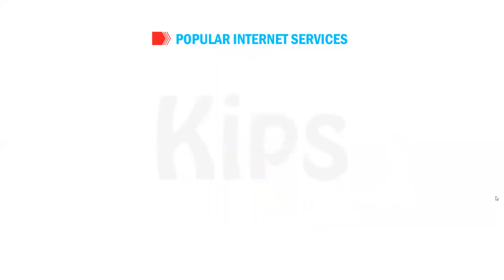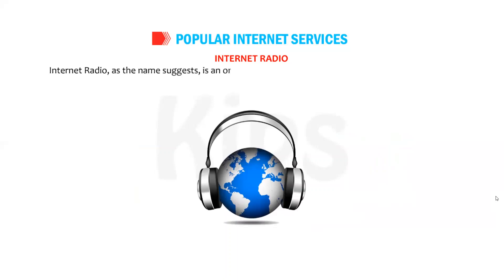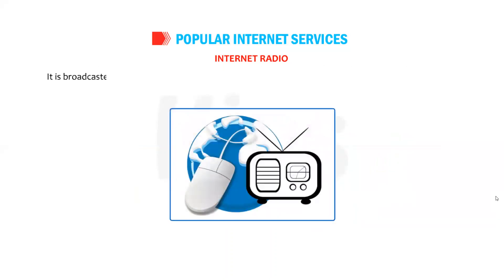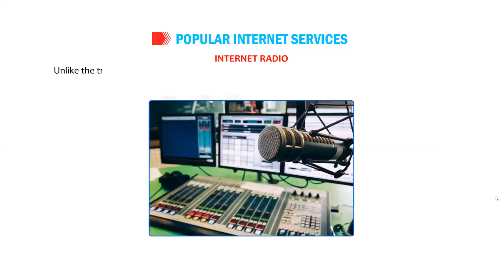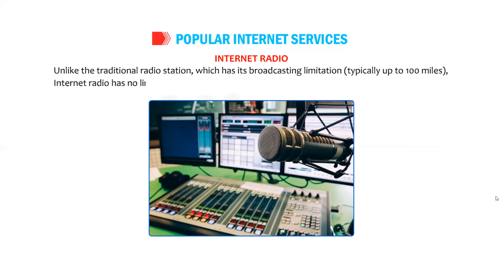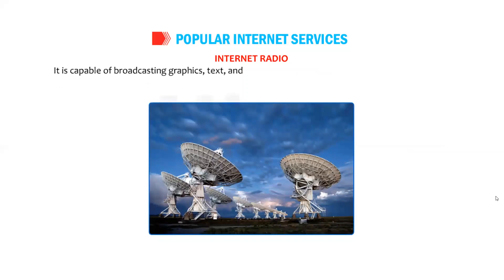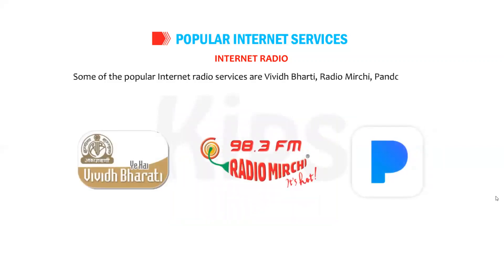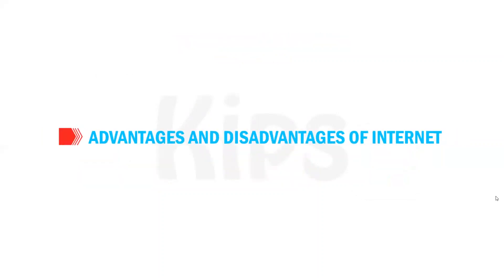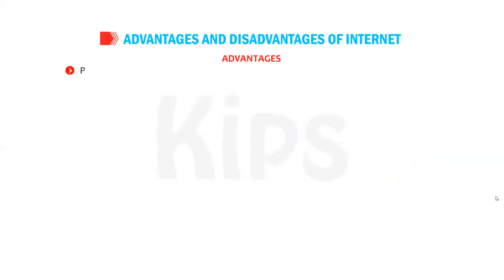Internet radio, as the name suggests, is an online radio service that is broadcasted over the internet on dedicated radio services, in much the same way as traditional radio with regard to its presentation and format. Internet radio has been in existence since the late 1990s. Unlike traditional radio stations, which have a broadcasting limitation of typically up to 100 miles, internet radio has no limitation. It is capable of broadcasting graphics, text, and links along with audio. Some popular internet radio services are Vividh Bharati, Radio Mirchi, and Pandora.